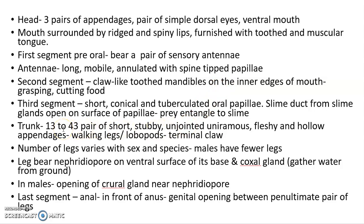The trunk comprises all segments apart from the first three, and the number of segments may range from 13 to 40. There will be 13 to 40 pairs of short, stubby, unjointed, and uniramerous fleshy hollow appendages on the trunk, called walking legs or lobopods, bearing terminal claws. The number of legs varies according to species, and males generally have fewer legs.